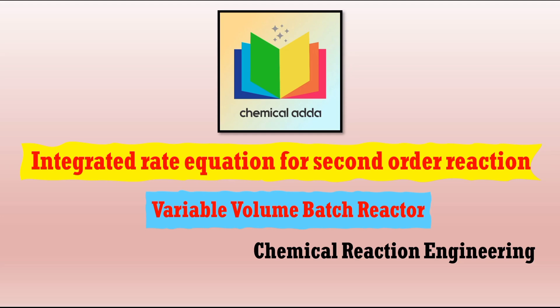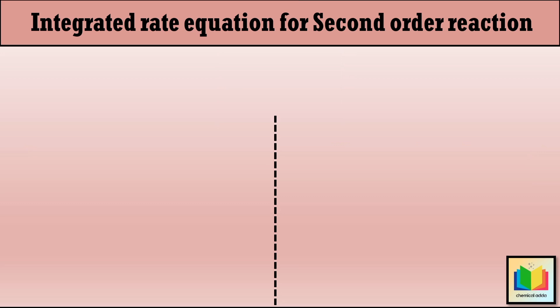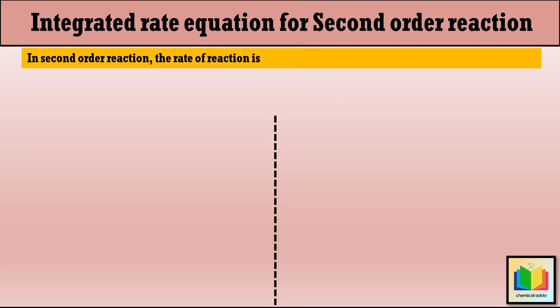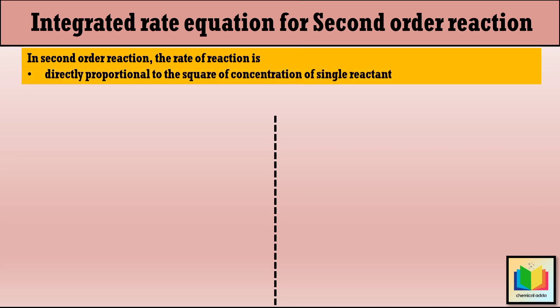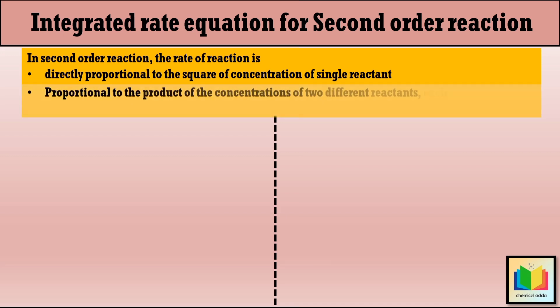Before we proceed with the derivation, it is essential to first understand what a second order reaction is. A reaction is known as second order when the rate of reaction is directly proportional to the square of the concentration of a single reactant, or proportional to the product of the concentrations of two different reactants each raised to the power of one.